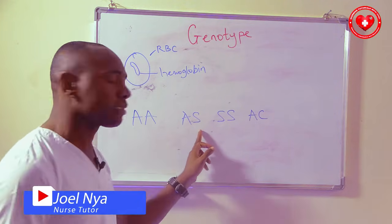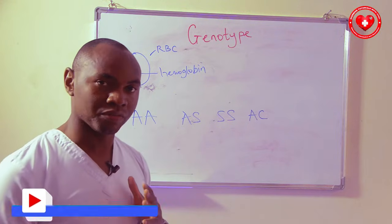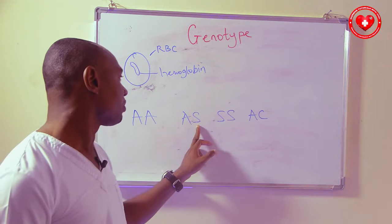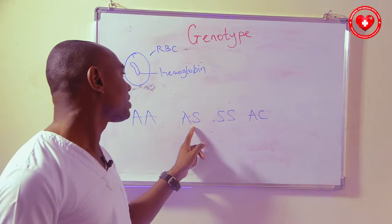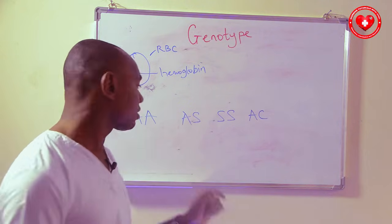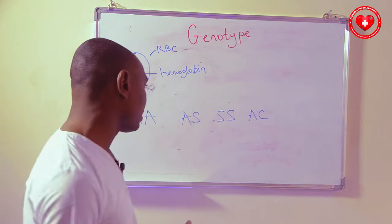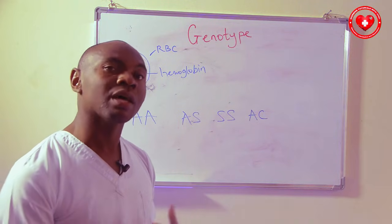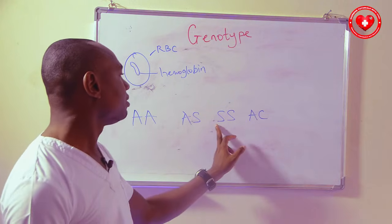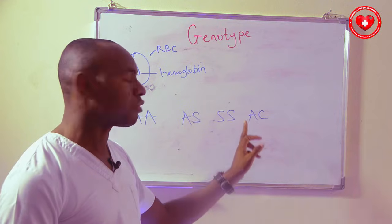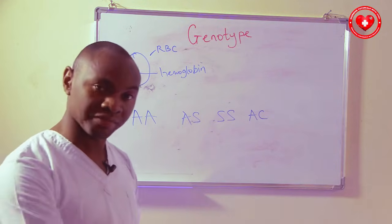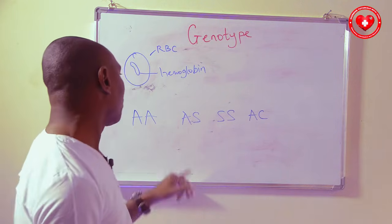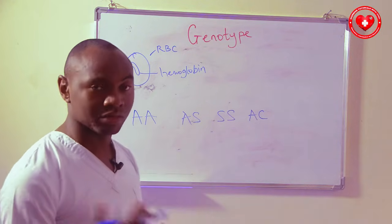Someone who is AS needs to be careful because this person carries the S trait, although the other part is good. So the person needs to be careful of who they marry in order not to have a child with sickle cell anemia. SS means the person has sickle cell anemia — they carry both traits and the disease is manifesting. AC is a variant, another version of the AS group.